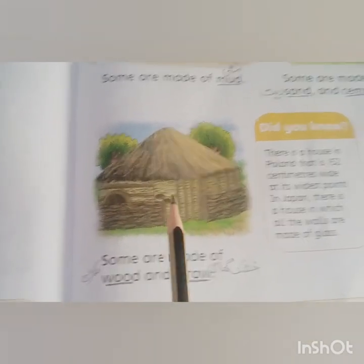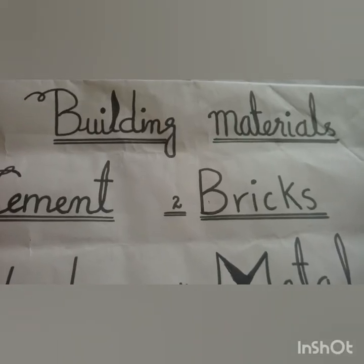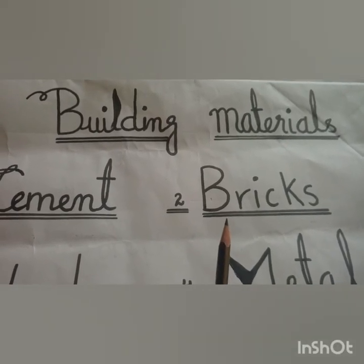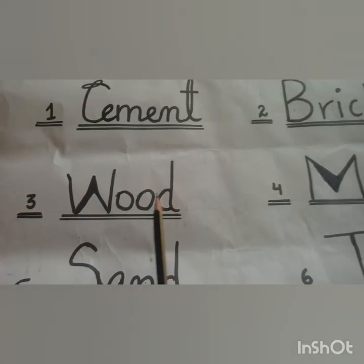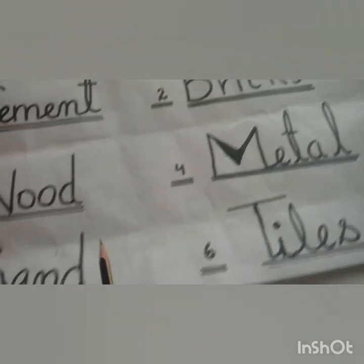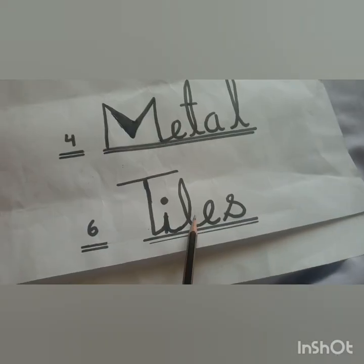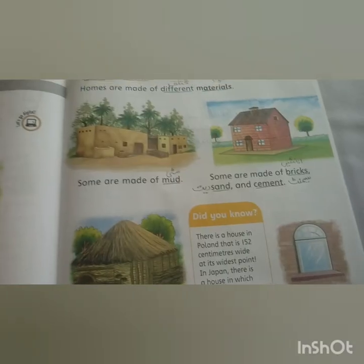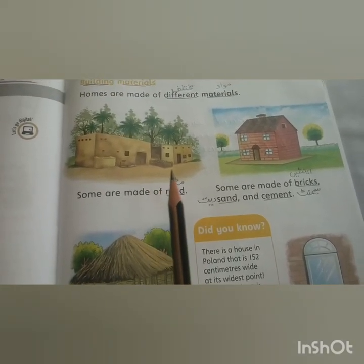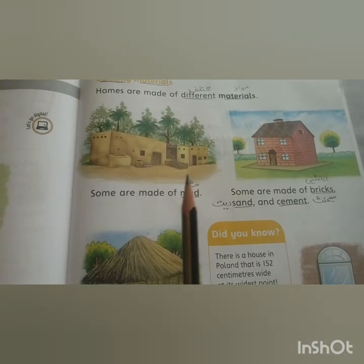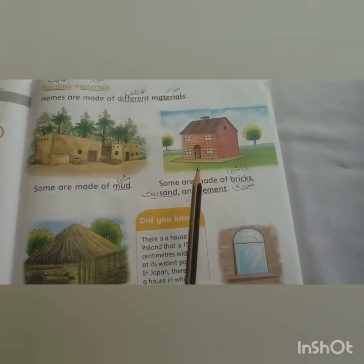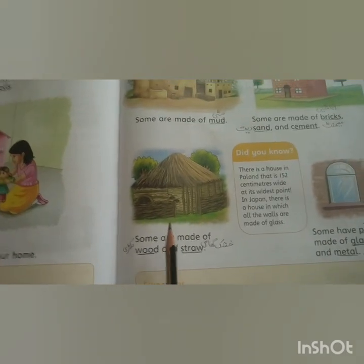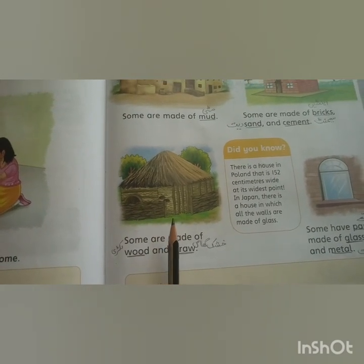Is chapter mein humne yeh seekha ke homes are made of different materials like cement, bricks, wood, metal, sand, and tiles. We also learned that homes are made from different things — this house is made of mud, this house is made of bricks, sand, and cement, and this house is made of wood and straw.